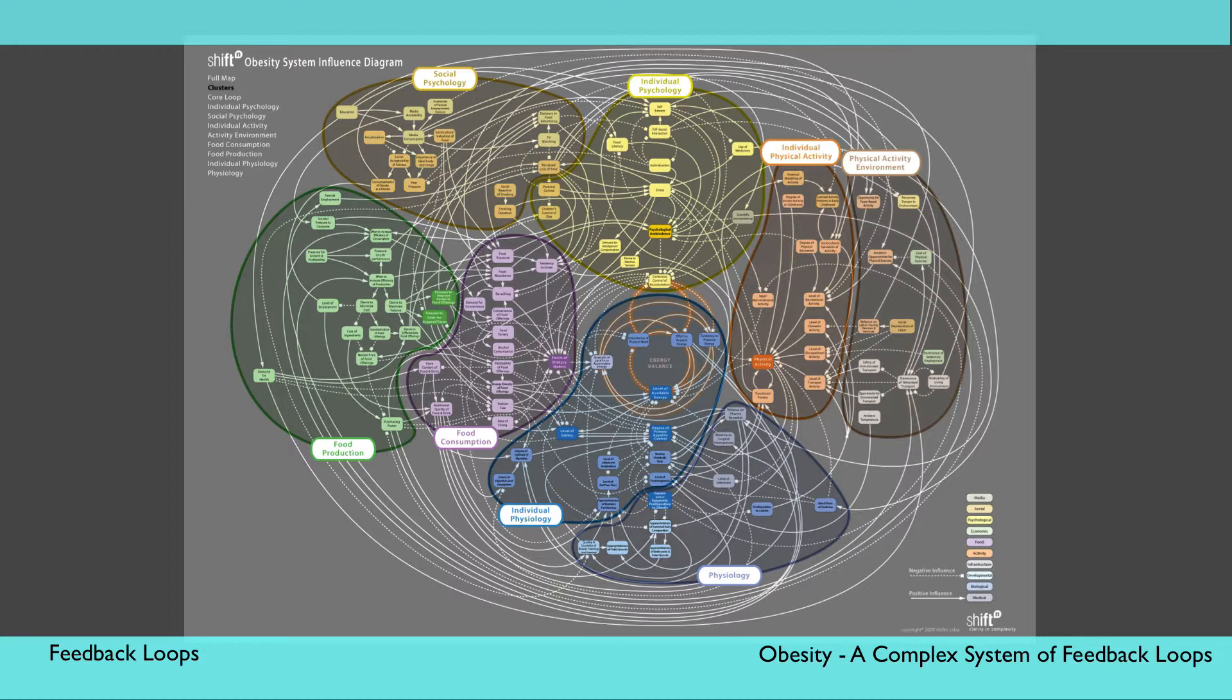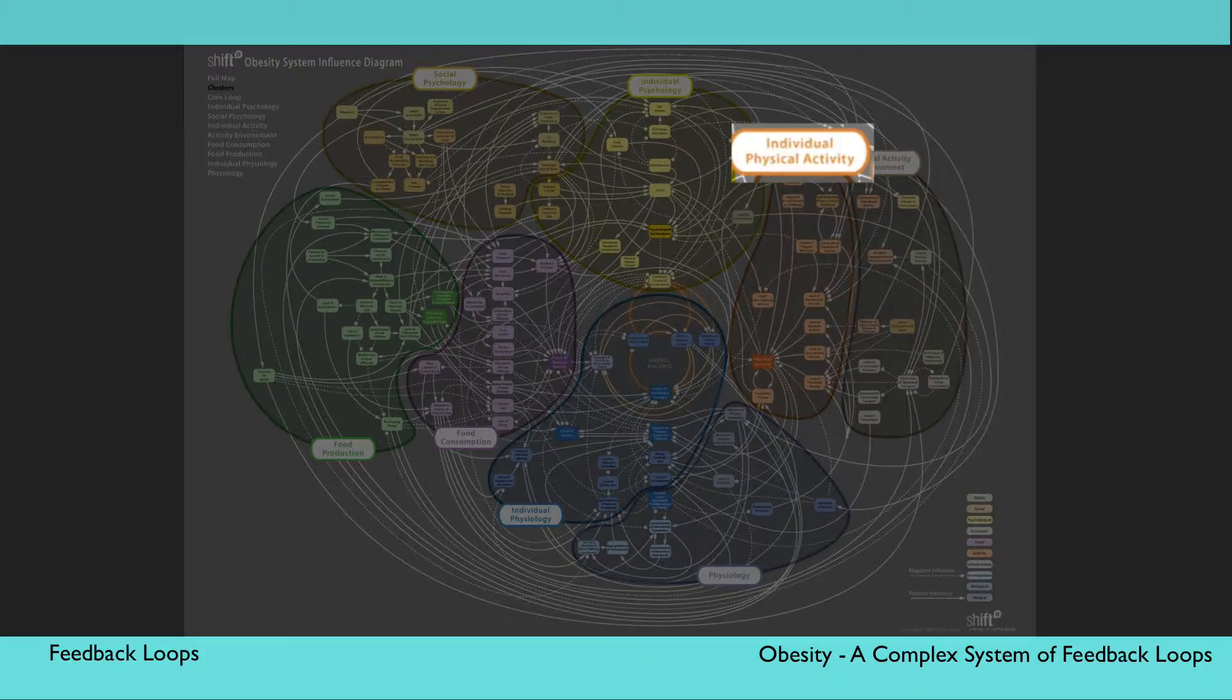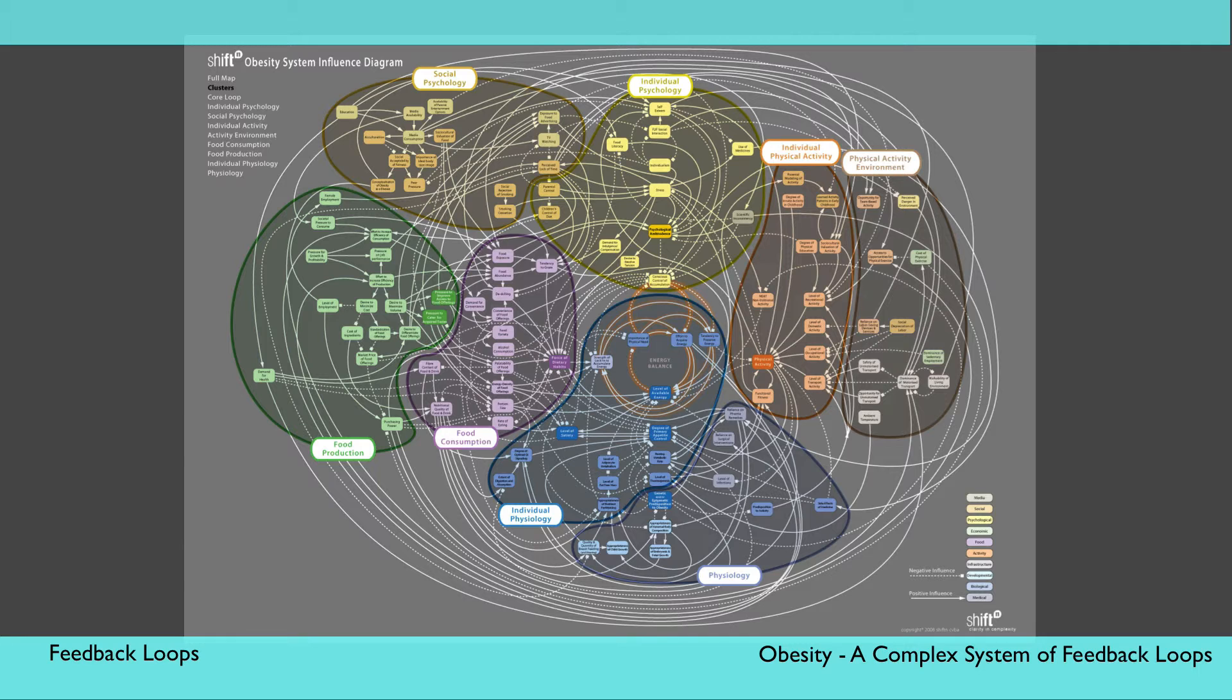Over 300 experts from a wide range of disciplines found that the influences on obesity rates were clustered by factors, such as individual psychology, social influences, and individual physical activity. By looking at each cluster in the map, we can see where different elements interact, forming both reinforcing and balancing feedback loops.